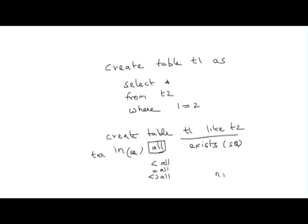For example, NOT IN: if you want to check that a value is not in something, it must be different from all values in that other table. So 't.a NOT IN subquery' is equivalent to 't.a <> ALL subquery'. There may be some issues with NULL values, but if you ignore NULLs, if a value is not in there it will certainly not match any tuples, and vice versa. So these two would be equivalent if you ignore NULL values.